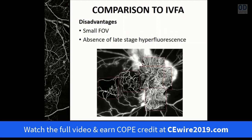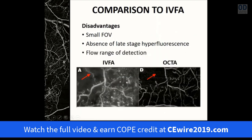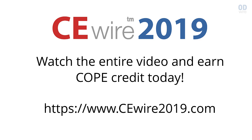The inability to image late-stage leakage has both advantages and disadvantages. The advantage is that it doesn't obscure our view of choroidal neovascular membranes, allowing precise delineation and measurement. The disadvantage is that leakage on FA can detect subtle areas of neovascularization or sources of macular edema — making it difficult to detect neovascularization without leakage or plan focal laser treatment. Additionally, OCT angiography has both fast-flow and slow-flow cutoffs: large choroidal vessels with very fast flow are poorly imaged, as are structures with very slow flow such as microaneurysms, fibrotic choroidal neovascular membranes, or capillaries within areas of ischemia.